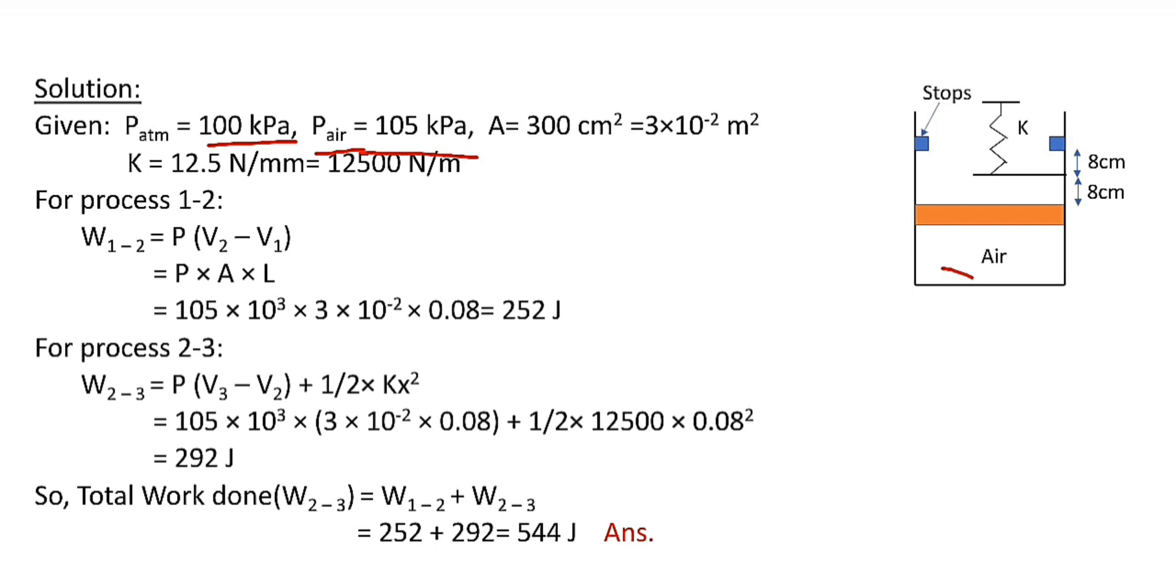Atmospheric pressure is 100 kPa and pressure of air inside the cylinder is 105 kPa. Area of piston is 300 cm² which in SI units equals 3×10⁻² m².